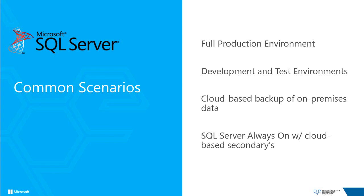SQL Server Always On with cloud-based secondaries is a very compelling scenario for on-premises applications. The general idea is you have an existing Always On cluster on-premises; however, one of the failover nodes can be running in Windows Azure. If the on-premises cluster fails, you have a node in the cloud on standby.